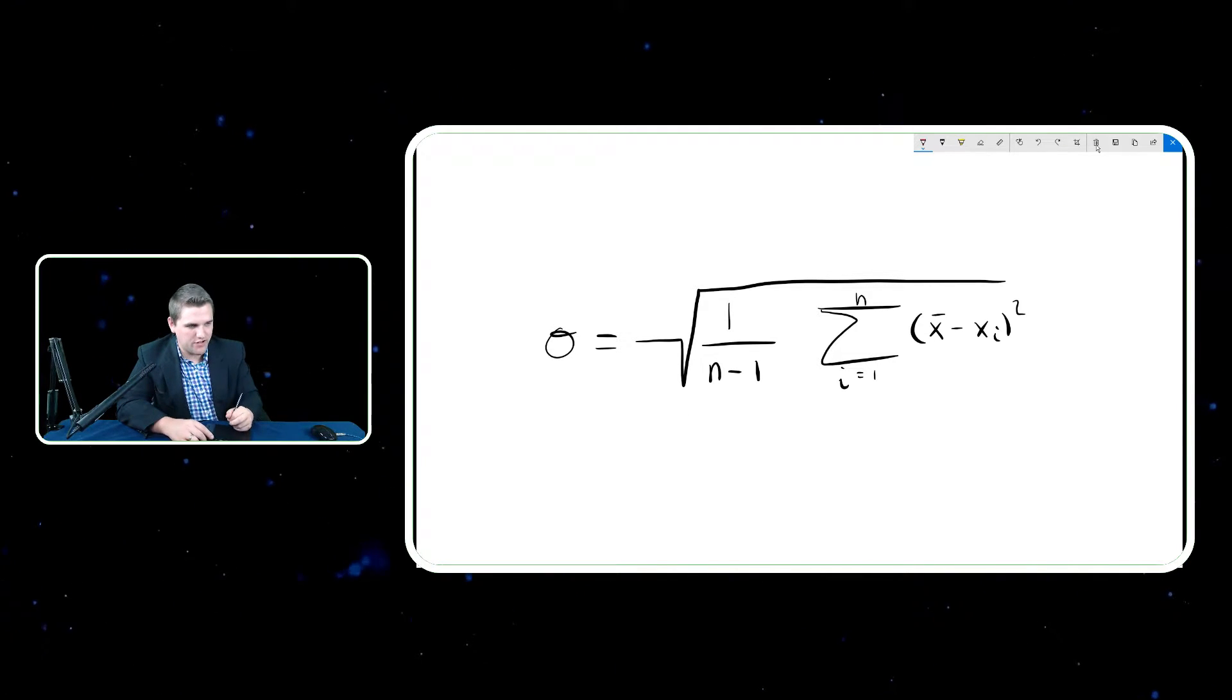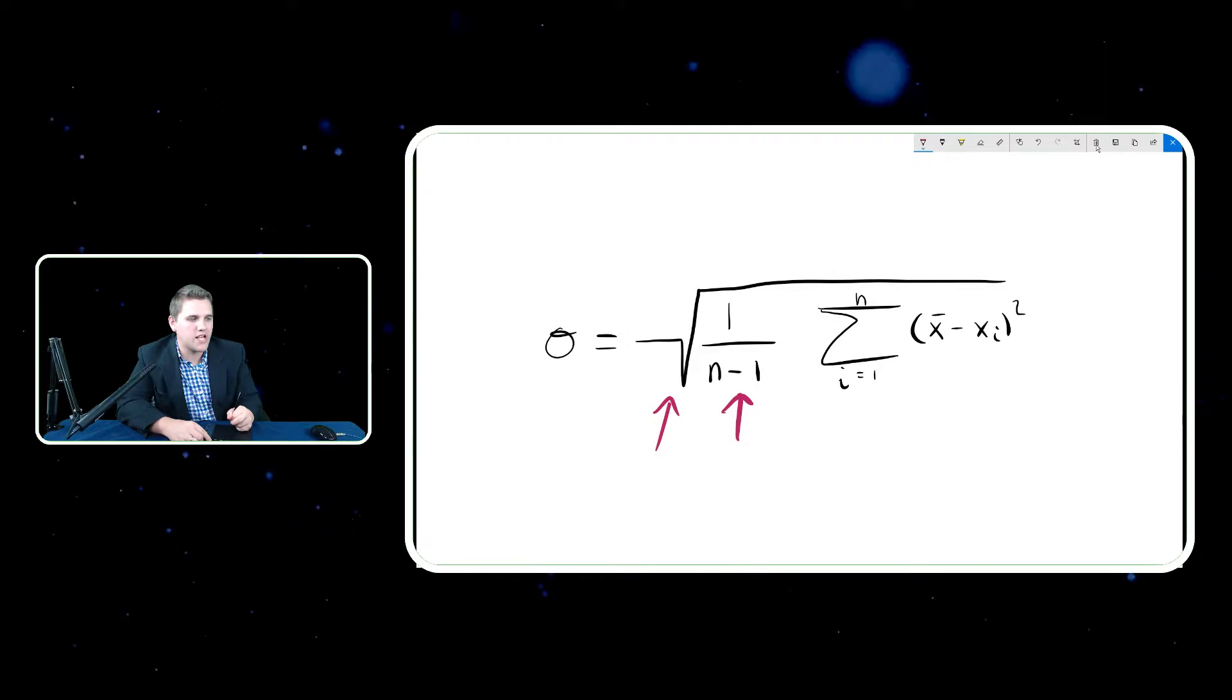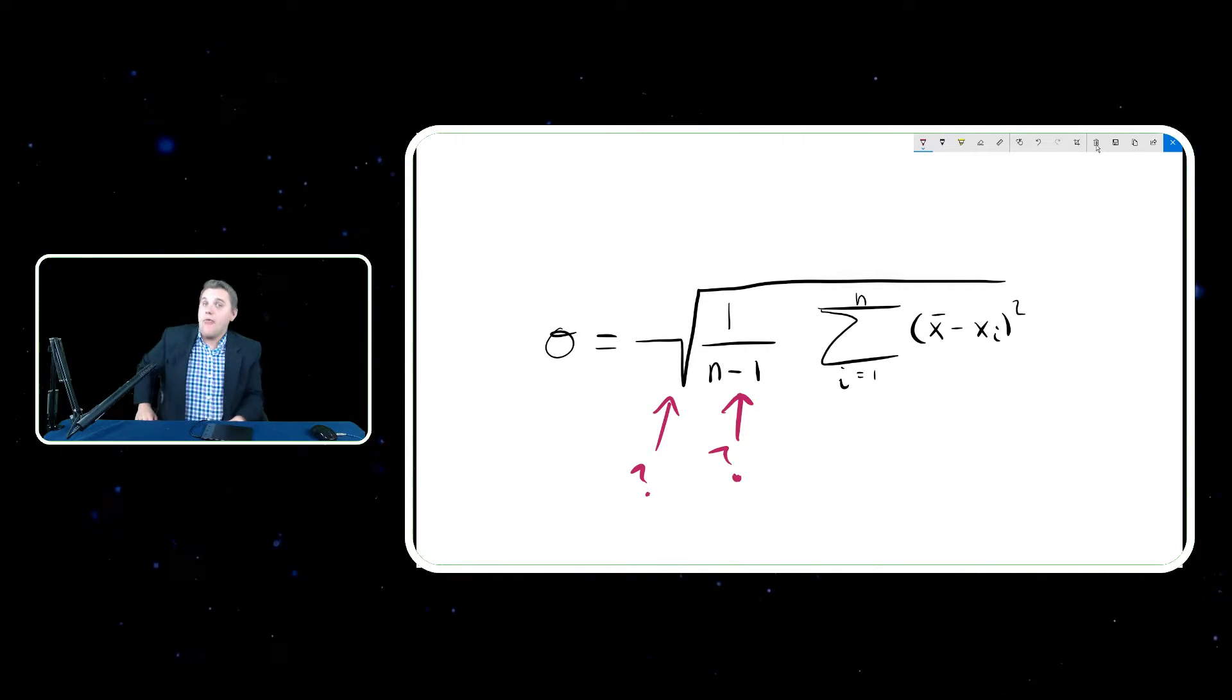So the question that I get oftentimes is, why divide by n minus one and why square root? That seems a little weird. And that's perfectly understandable. That is kind of a weird thing. The main reason is we first have to analyze exactly why the formula looks like this in the first place. I mean, to be honest, all five steps look a little weird.